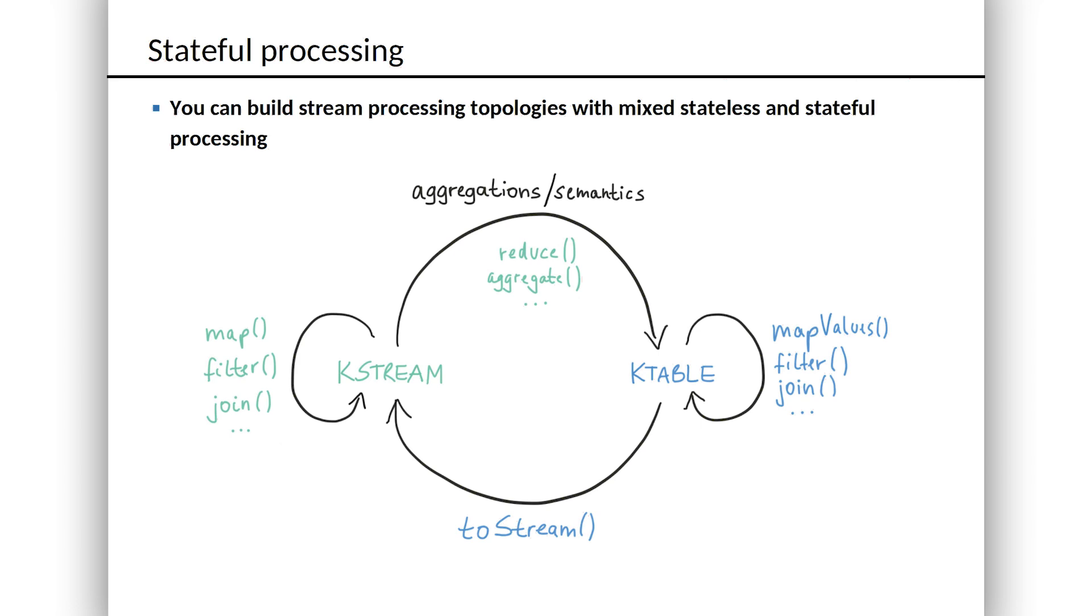We see this stream-table duality where you can convert one into another, and while you've got a stream, there are various stateful and stateless transformations that you can perform on it. While you've got a table, there are transformations you can perform on that. And so when you're thinking of the data in your business as a stream of events, which in reality it is, you've got access to this rich API that lets you treat events and streams as first-class citizens and do the kind of processing on those things that you're likely to need to do as you build your system.